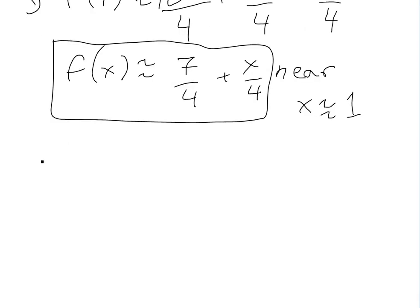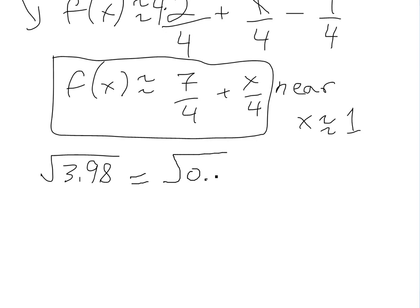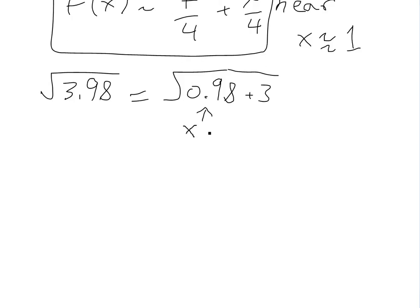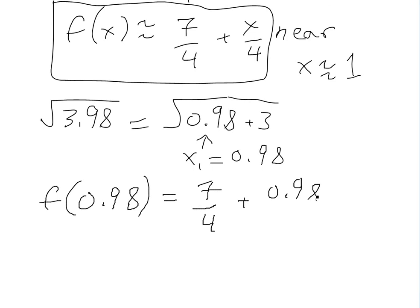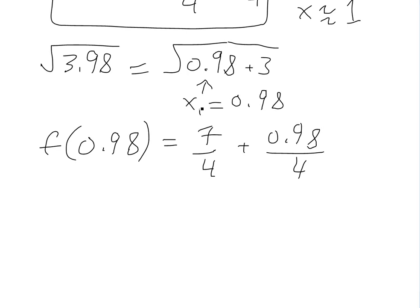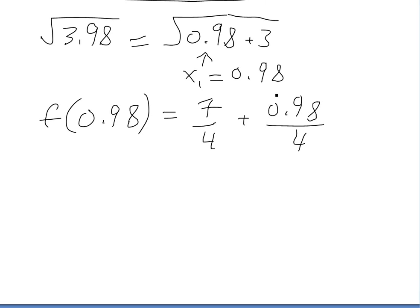Now we use it to approximate 3.98. Since f(x) = √(x+3), we need x+3 = 3.98, so x = 0.98. Plugging in: f(0.98) ≈ 7/4 + 0.98/4. If you might ask why we bother with approximation when using a calculator — complex programs all use some sort of approximation for complex functions. Plugging in gives approximately 1.995.